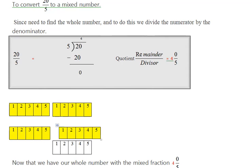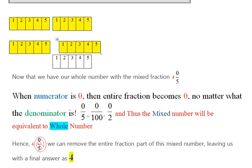So, this is how the rule is, let's see, move ahead. When numerator is 0, then entire fraction becomes 0. No matter what the denominator is, 0/5, 0/100, 0/2, 0/50, 0/3, whatever number you say in the denominator.